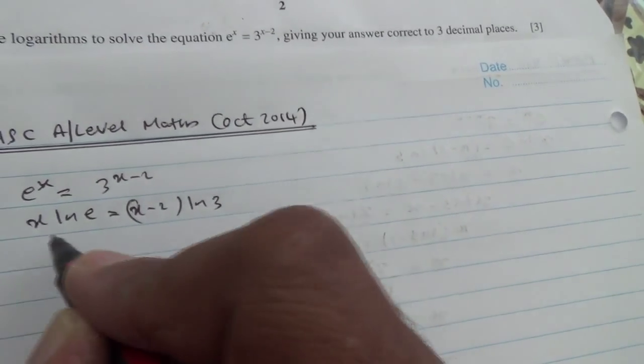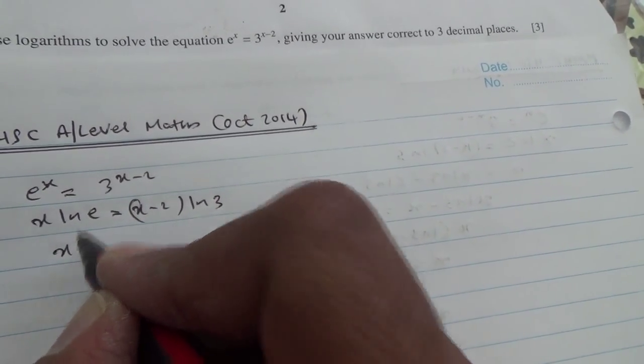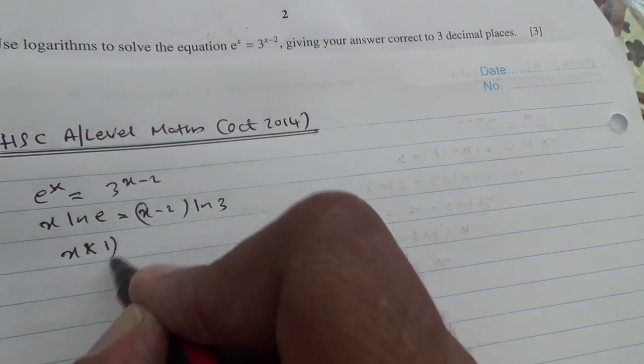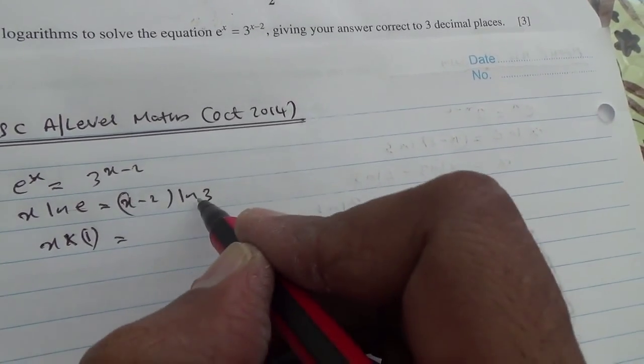Using natural logarithms, we can say x ln e is equal to x minus 2 in brackets ln 3. So x ln e is x times 1 because ln e is 1, so here we can expand.